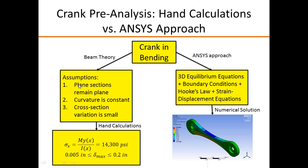we are making these assumptions. The plane sections remain plane, curvature is constant, and these are the first two conventional assumptions made with beam theory. And in this case, we also need to make the additional assumption that the cross-section variation is small. With these assumptions, we can perform hand calculations and predict the bending stress and maximum displacement.